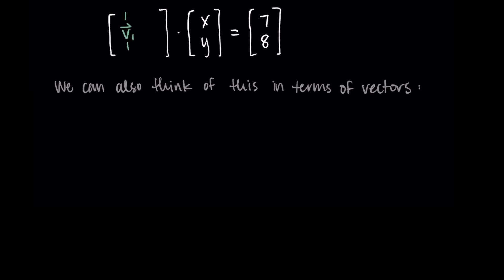So in this way we're taking the first column, that v1 vector, and multiplying it by x and adding it to the second vector times y. So it's a linear combination of the vectors v1 and v2.